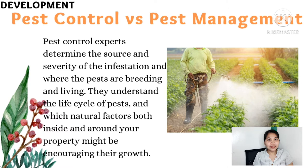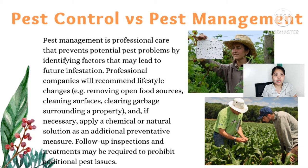Pest control experts determine the source and severity of the infestation and where the pests are breeding and living. They understand the life cycle of pests and which natural factors, both inside and around your property, might be encouraging their growth. Pest management is professional care that prevents potential pest problems by identifying factors that may lead to future infestation. Professional companies will recommend lifestyle changes — for example, removing open food sources, cleaning surfaces, clearing garbage surrounding the property — and if necessary, apply chemical or natural solutions as additional preventive measures. Follow-up inspections and treatments may be required to prohibit additional pest issues.